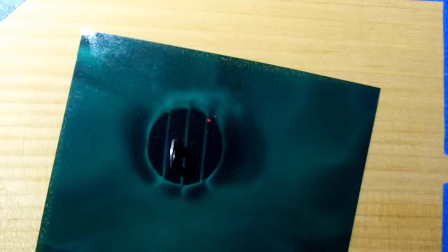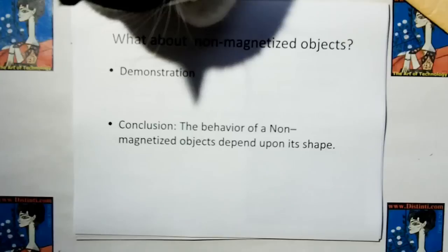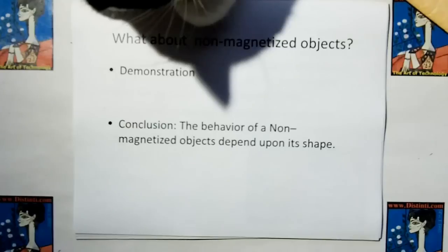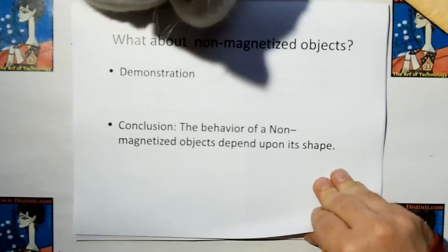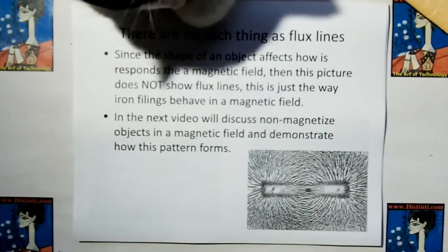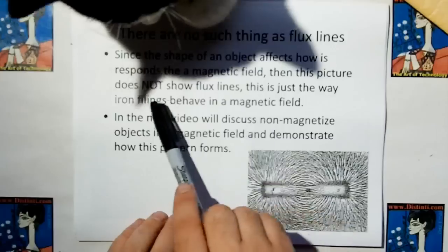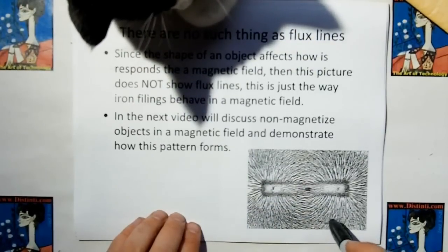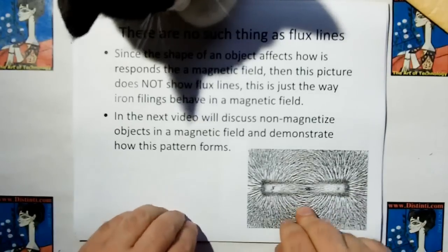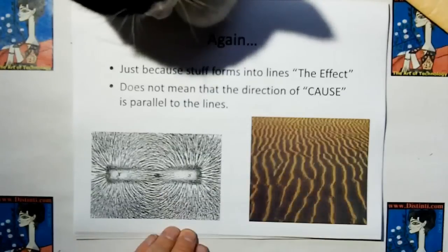So what we learned from this is that depending on the shape of the non-magnetized object, it will behave differently to a magnetic field. Just because iron filings behave one way doesn't mean that another shaped powder or substance will behave a completely different way. So we have to be careful what we observe. The conclusion is because non-magnetized objects depend on its shape, can each shape of non-magnetized object behave differently to a magnetic field? And therefore, there is no such thing as flux lines. Since the shape of an object affects how it responds to a magnetic field, then this picture does not show flux lines. This is just the way iron filings behave in a magnetic field.